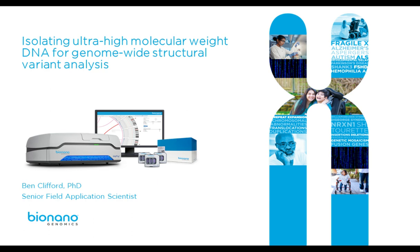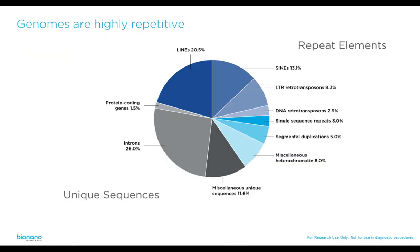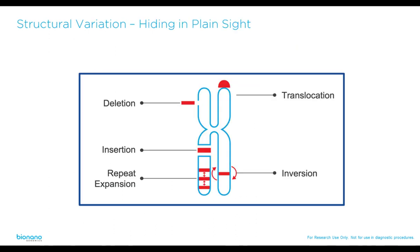For anybody who is not familiar with BioNano, our platform is the SAFIRE system, which does whole genome imaging — not a sequencing-based approach. Genomes are highly repetitive; if you look at the human genome, only around one-third consists of unique sequences. The other two-thirds are repetitive elements — LINEs, SINEs, transposons, and anything else found in repeats.